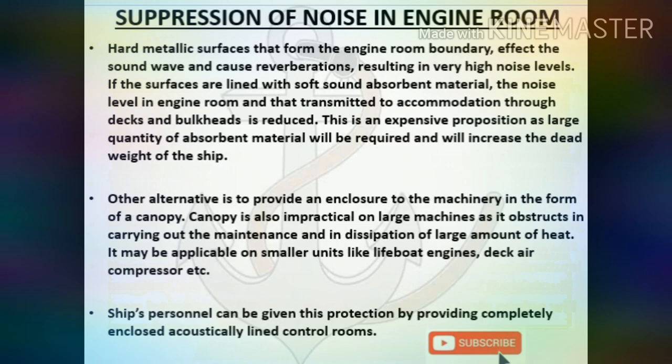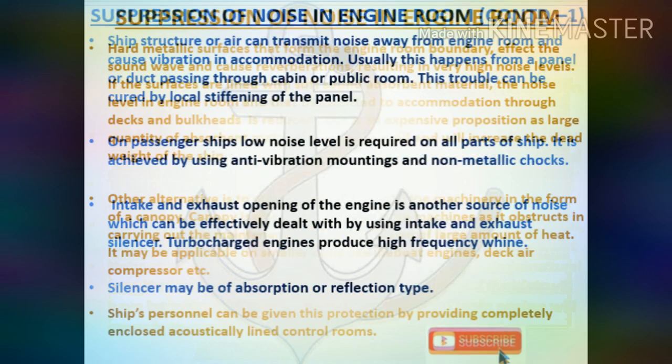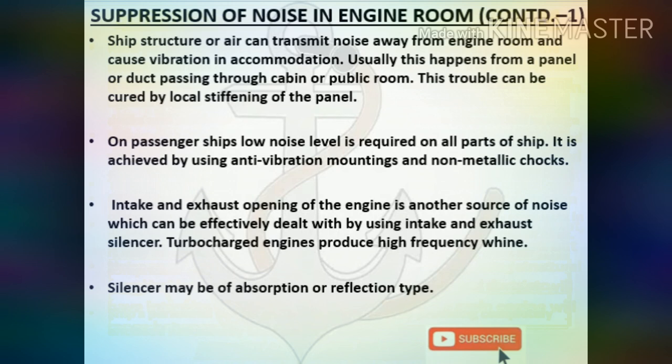Ships personnel can be given protection by providing completely enclosed acoustically lined control rooms. Ship structure or air can transmit noise away from the engine room and cause vibration in accommodation, usually from a panel or duct passing through a cabin or public room. This can be cured by local stiffening of the panel. On passenger ships, low noise level is required in all parts of the ship, achieved by using anti-vibration mountings and non-metallic shocks. Intake and exhaust openings of the engine are another source of noise, which can be effectively dealt with by using intake and exhaust silencers. Turbocharged engines produce a high-frequency whine.